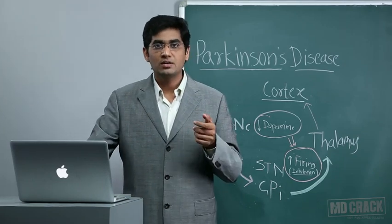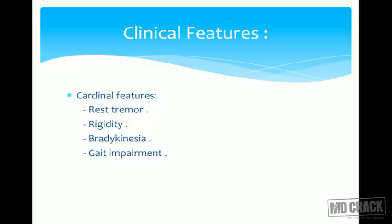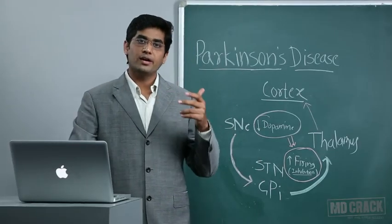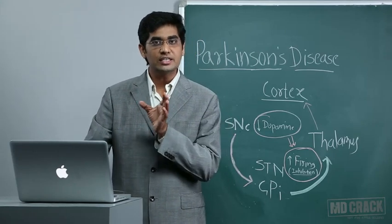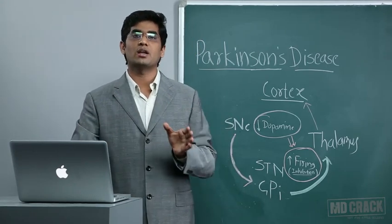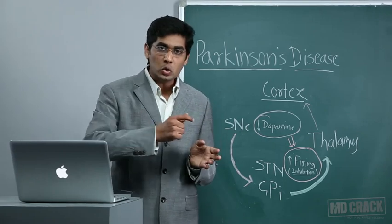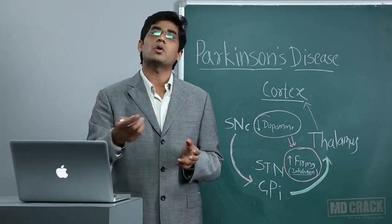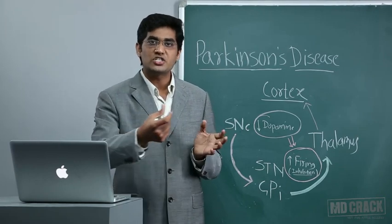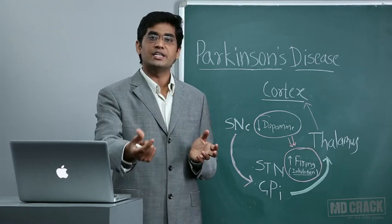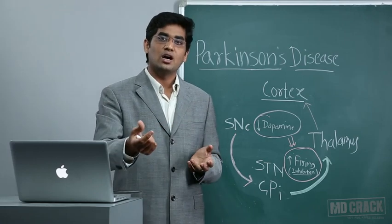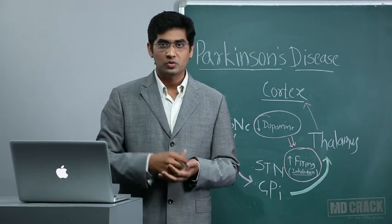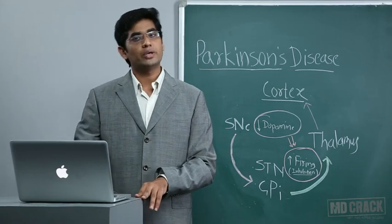The pin-rolling tremor is a cardinal feature of Parkinson's disease, where the vibration of fingers is quite significant. Regarding rigidity: there are two types — clasp knife rigidity and lead pipe rigidity — and rigidity signifies involvement of the extrapyramidal tract. Resistance throughout the entire range of motion indicates lead pipe rigidity, while resistance only at the initial part indicates cogwheel rigidity. Both cogwheel and lead pipe rigidity can be seen in Parkinson's disease.